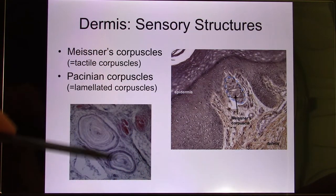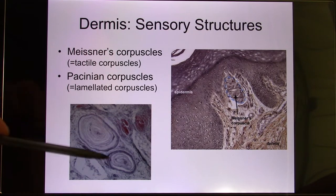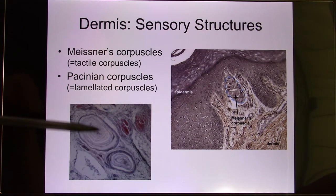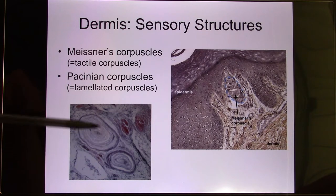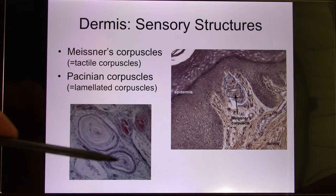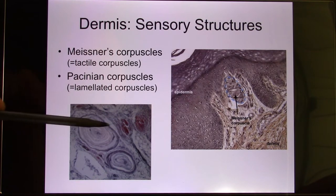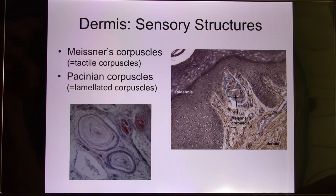The Pacinian capsule has a very unique ring structure. The Pacinian capsule's function is to sense pressure, so it's much deeper. Sometimes in some models it's found very close to the hypodermis layer, but technically it's in the dermis layer — in the very deep part.